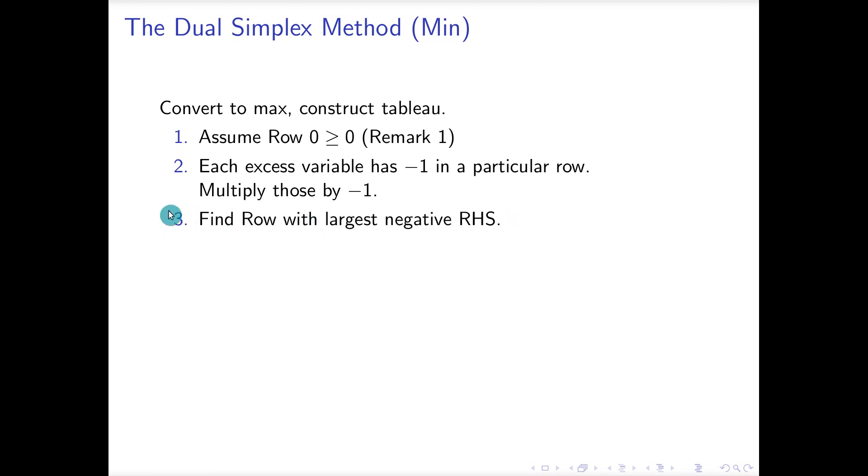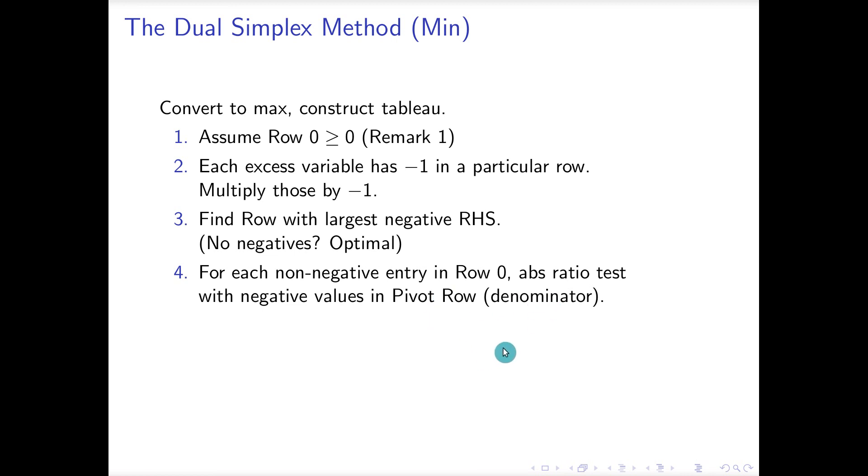The way the algorithm will really start, step three is where the starting point actually is: you find the row with the largest negative right-hand side. What happens if there are no negatives in the right hand side? You've got an optimal solution. Otherwise, there is a negative row and that will be our pivoting row. Now, how do we find the column? We're going to take a ratio test but it's a little bit different. Remember that row zero is going to have the numerator and the row with the negative value is the denominator, and only the negative values in that row are in the denominator. Then you take the absolute value of those, find the minimum, and that is the pivot column.